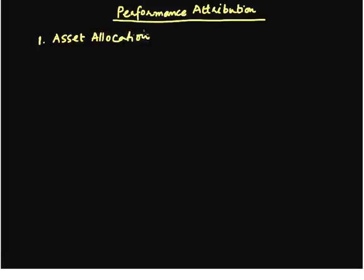We may invest some percentage of our funds in equities, another percentage in debt securities, and yet another percentage in risk-free assets. So how we are distributing or allocating our funds to broad asset classes can affect the performance of a portfolio. Now within each asset class we focus on various sectors and then the securities within the sector. That could be the second reason affecting performance: security selection.